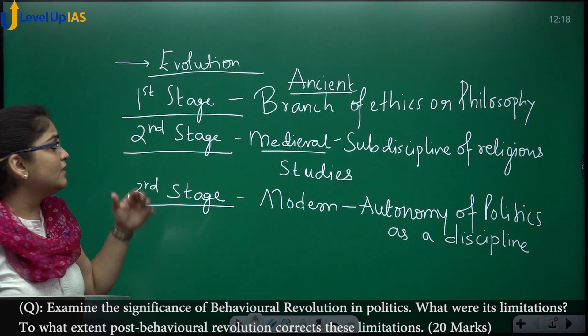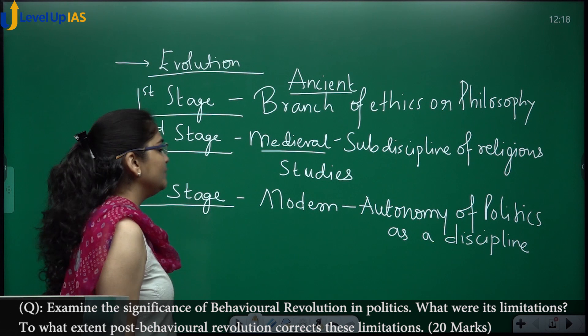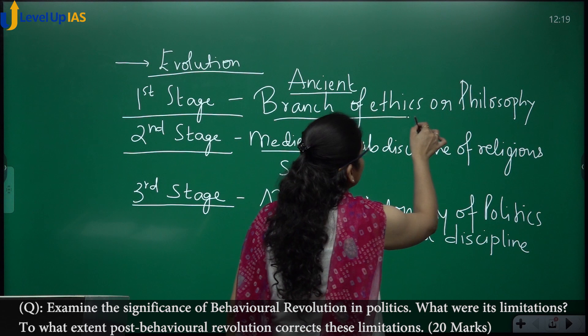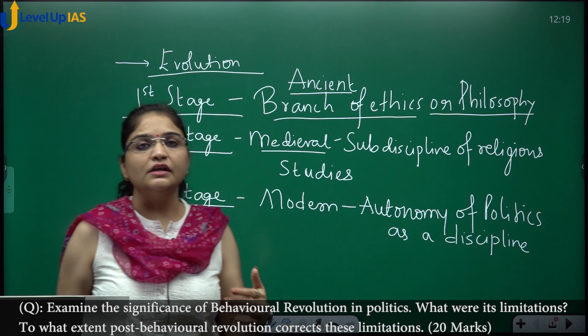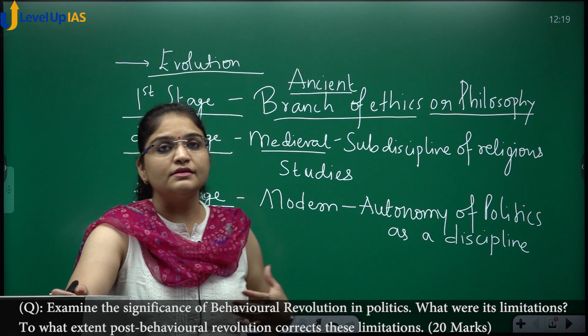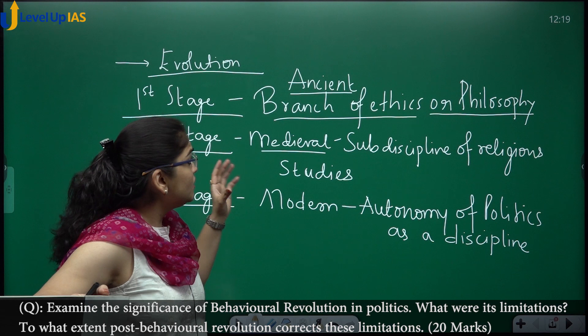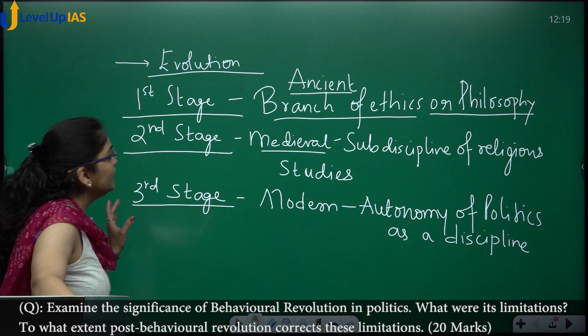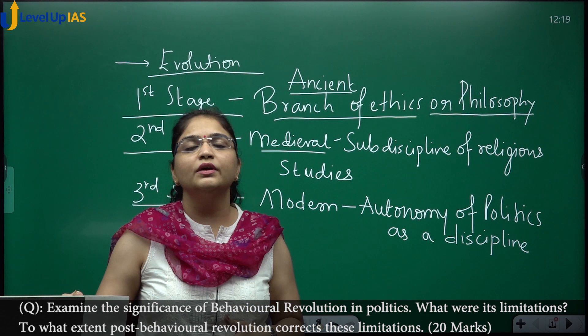Looking at the evolution of political science in various stages: in the first stage, in ancient times, political science was largely studied as a branch of ethics or philosophy. Plato says good life and good political life are inseparable, and politics and ethics cannot be separated. Political science was thus considered equivalent to philosophy because it examined various concepts and ideals.